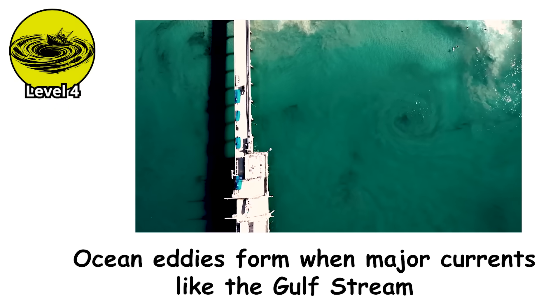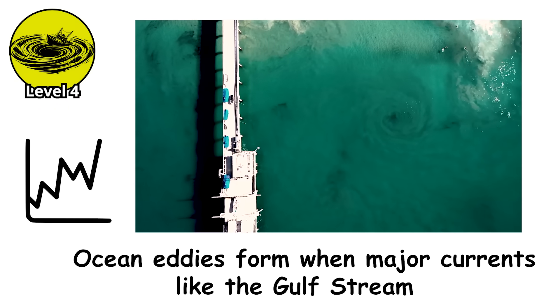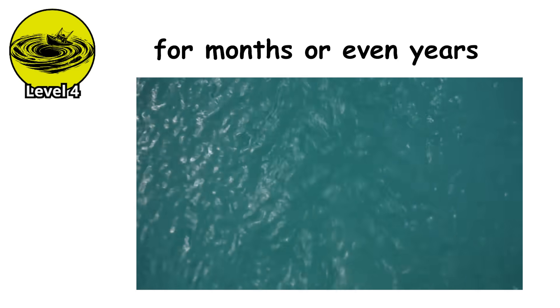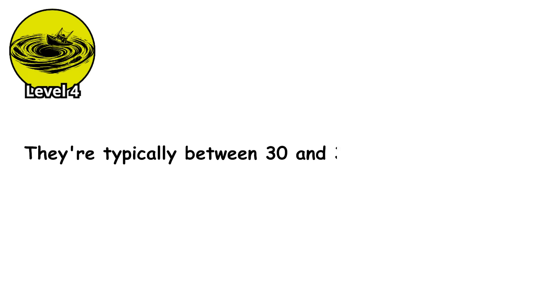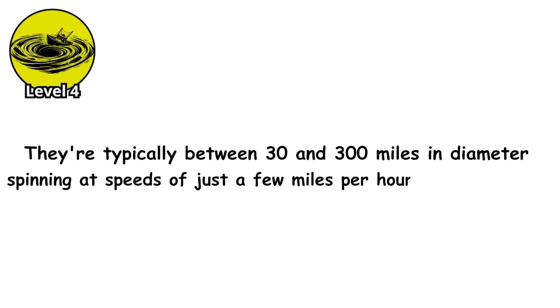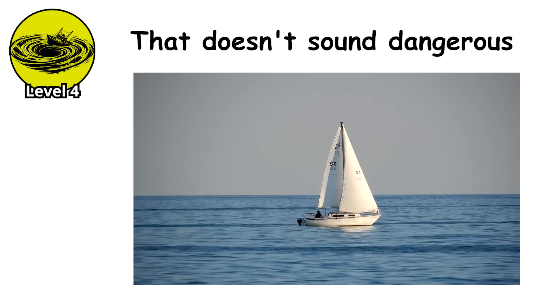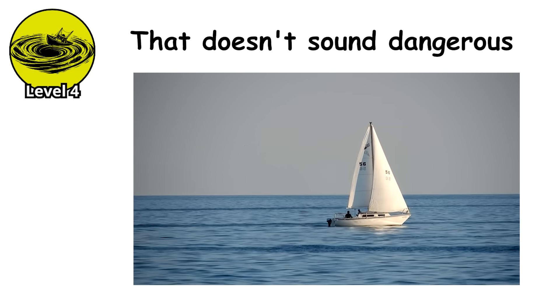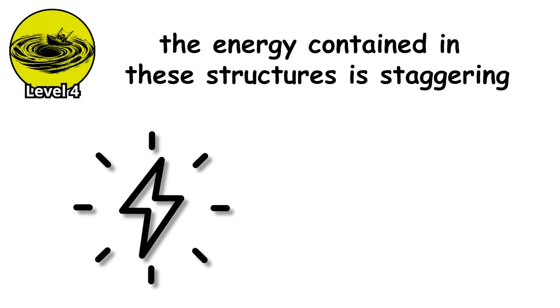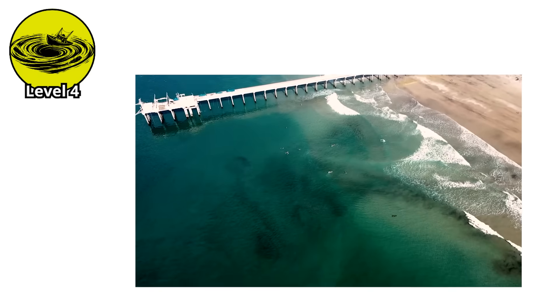Ocean eddies form when major currents like the Gulf Stream become unstable and pinch off, creating rotating masses of water that drift across ocean basins for months or even years. They're typically between 30 and 300 miles in diameter, spinning at speeds of just a few miles per hour at the surface. That doesn't sound dangerous. And if you're on a boat passing through one, you might not even notice. But the energy contained in these structures is staggering.